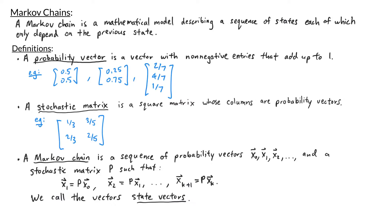Finally, a Markov chain is a sequence of probability vectors x0, x1, x2, and so forth, and a stochastic matrix P, such that x1 equals P times x0, x2 equals P times x1, and in general, x_{k+1} equals P times x_k. We call the vectors x0, x1, x2, and so forth state vectors. The equation x_{k+1} = P·x_k tells us that to get to the next state, we take P times the previous state.